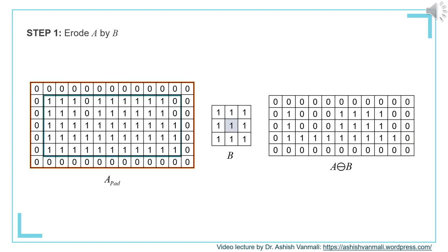To erode A with B, we keep the center of B at various locations in A-padded and find the underneath sub-image. The center of B is always kept inside A only, within the blue boundary. If we have all ones in the sub-image, then B is totally contained and the corresponding output will be 1; otherwise the output will be 0. The result of the erosion is shown in the third figure.